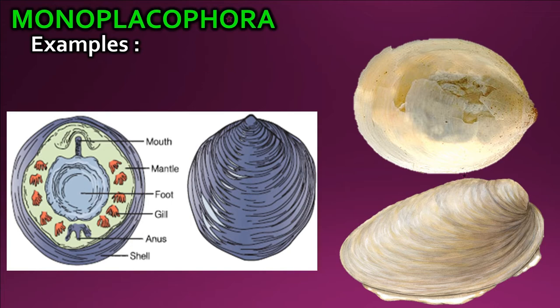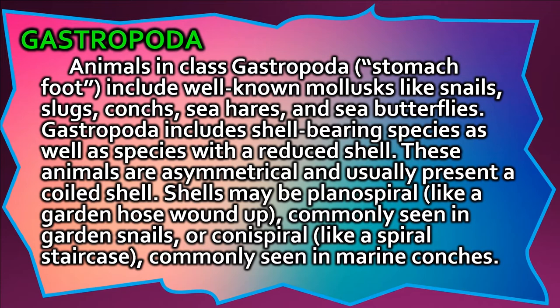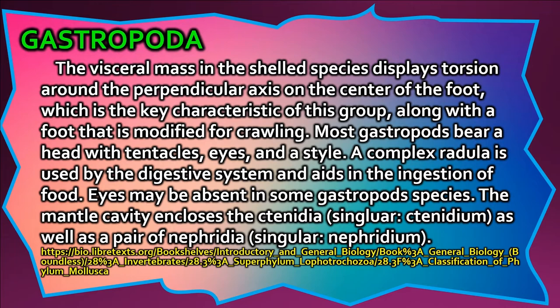Animals in class Gastropoda (stomach foot) include well-known molluscs like snails, slugs, conchs, sea hares, and sea butterflies. Gastropoda includes shell-bearing species as well as species with a reduced shell. These animals are asymmetrical and usually present a coiled shell — either planospiral, like a garden hose wound up, or conispiral, like a spiral staircase. The visceral mass displays torsion around the perpendicular axis on the center of the foot. Most gastropods bear a head with tentacles, eyes, and a style; a complex radula aids in ingestion of food.